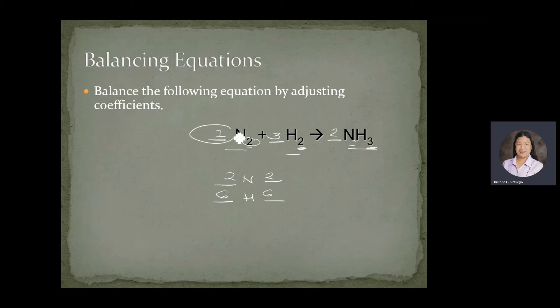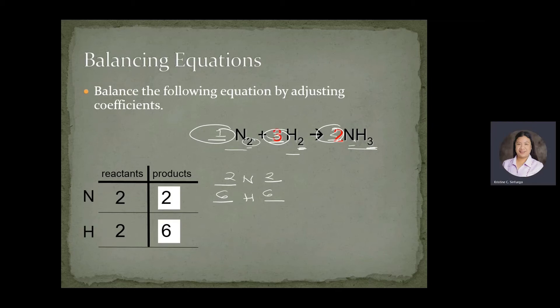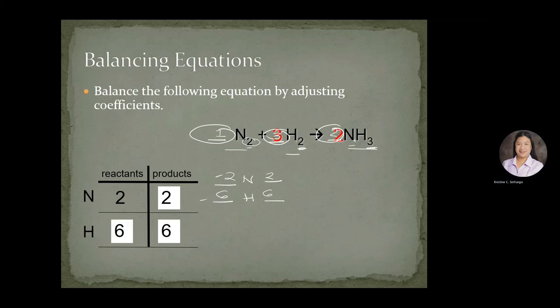The coefficients used to balance the equation are one, three, and two. Checking: nitrogen — two on each side; hydrogen — six on each side. The equation is balanced.